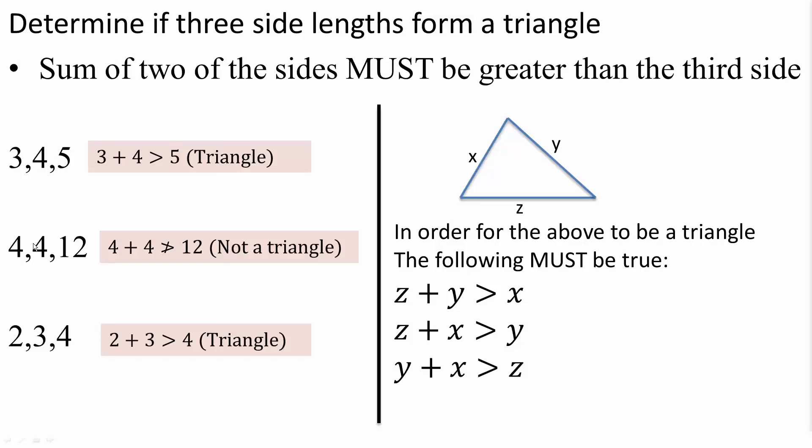Another example: 4, 4, 12. 4 plus 4 is 8, 8 is not greater than 12, so this right here will not form a triangle.